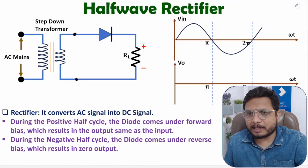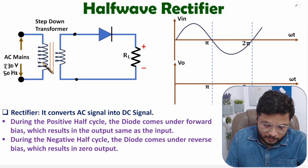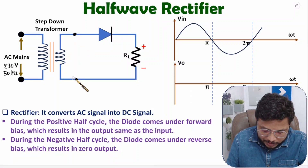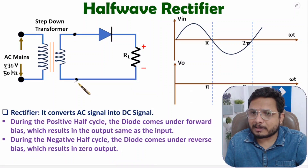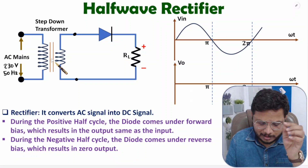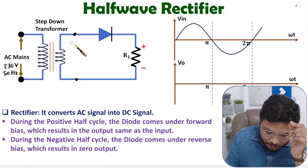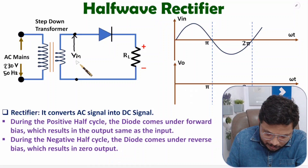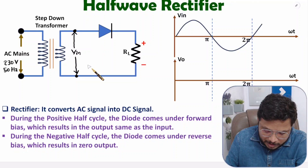AC mains input in India is 230 volts at 50 hertz. Using this transformer, you can step down the voltage. How much voltage appears at the transformer output depends on the winding ratio — we won't go into that detail now. Let us assume the output voltage of this transformer is lower than the input, and we name this voltage VIN, which is the voltage we apply to the rectifier circuit.